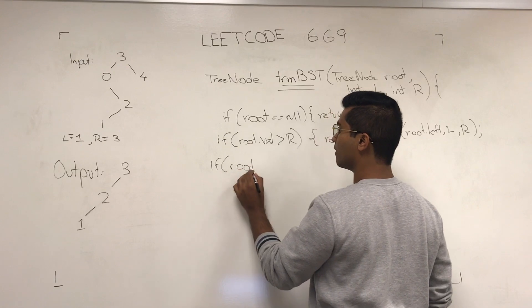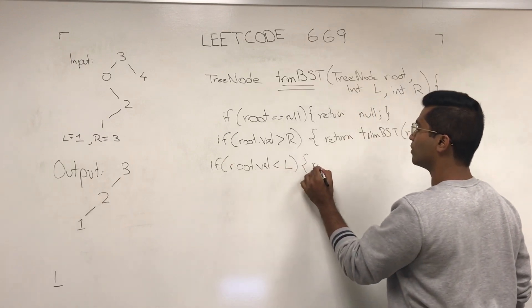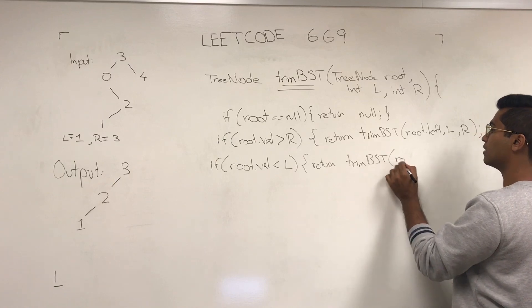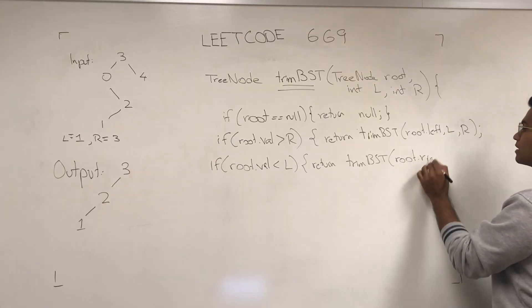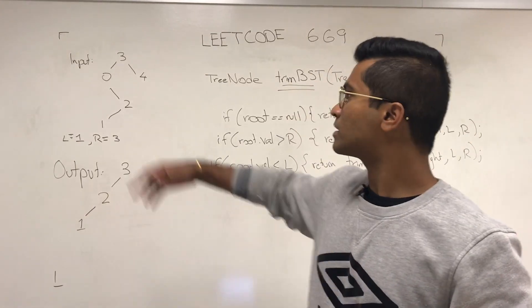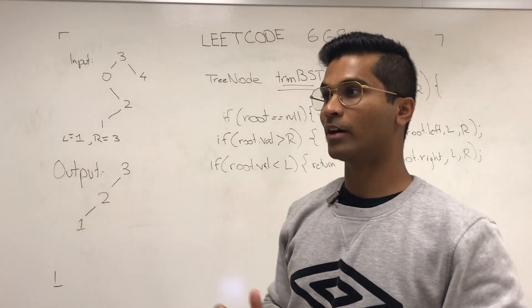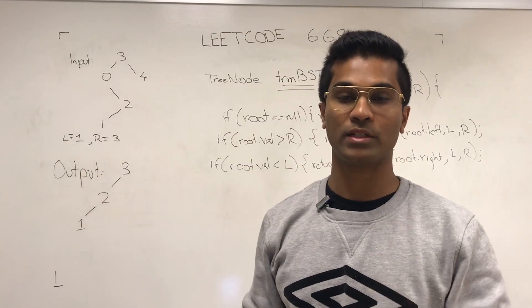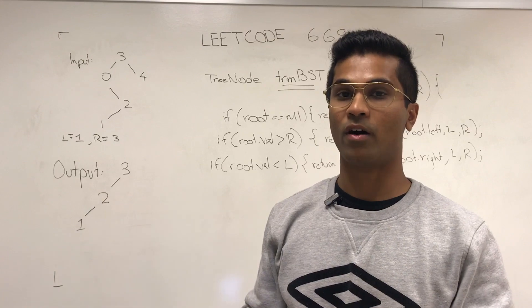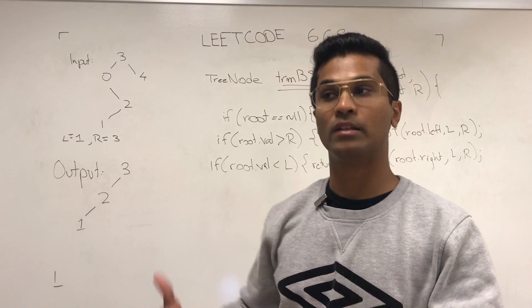Pretty much what this is saying is when we ask the original root node, if the value is not within the bounds, the original node is going to say, hey, don't ask me, ask my left child or ask my right child based on if the original node is less than L or greater than L.